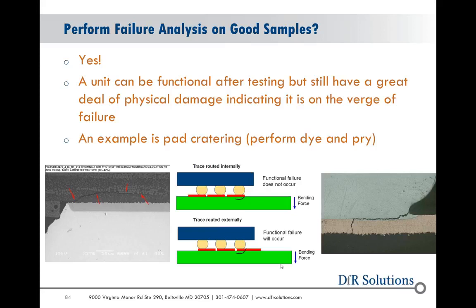Pad cratering is one example — you can have a lot of pads tearing out of the laminate and they'll still function. However, it's a good indication you're probably going to get failure very soon. In fact, you may have some that are already cracked but still touching, so it may still function — as shown in the image on the right.